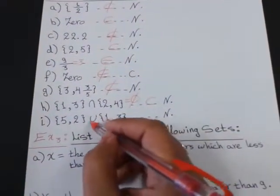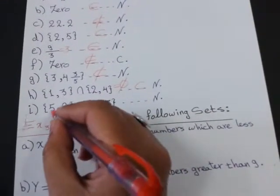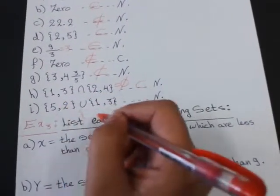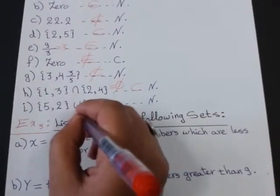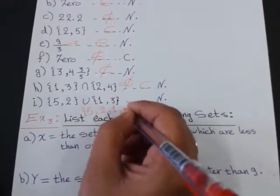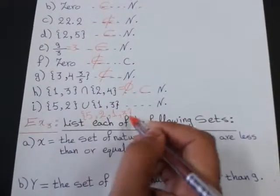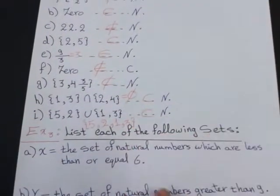5 and 2 union 1 and 3. Union means I will put all the elements inside one set without repetition. So, the new set: 5, 2, 1 and 3. All of these are natural numbers. So, this is subset of N.